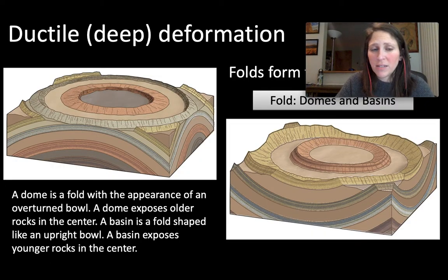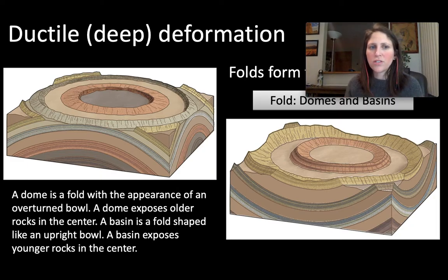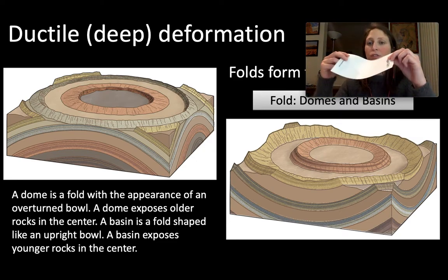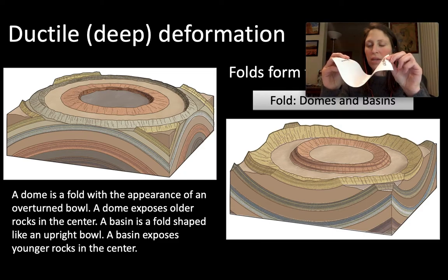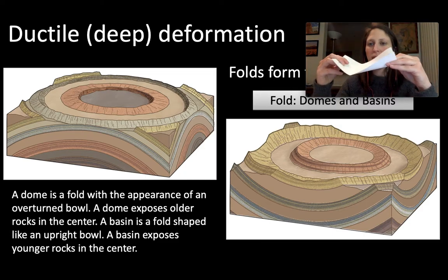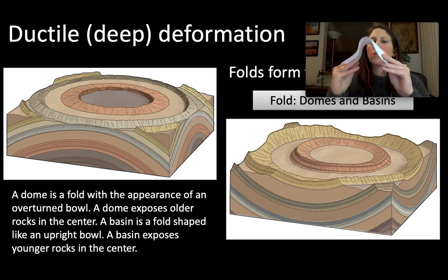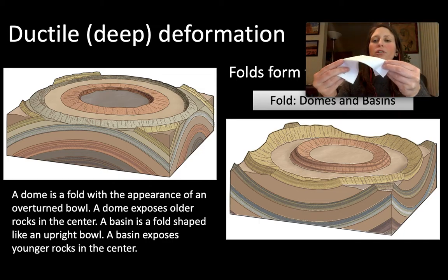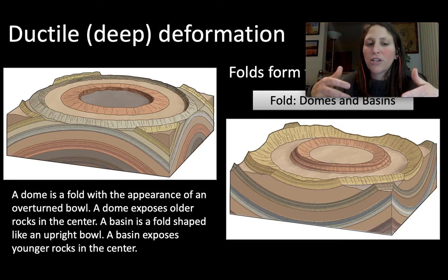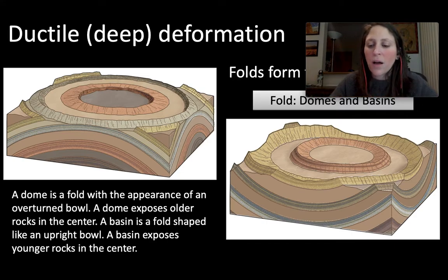You can also get basins and domes forming from compression. This is our ductile deformation from compression: instead of applying pressure from one direction, you apply pressure on all sides, creating a basin or dome structure. You're applying compression and creating these domes, folds, and wavy features — all from compression.